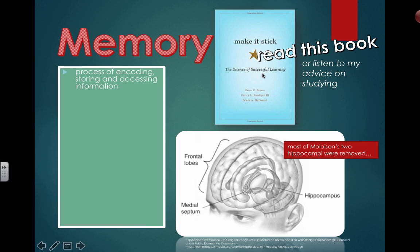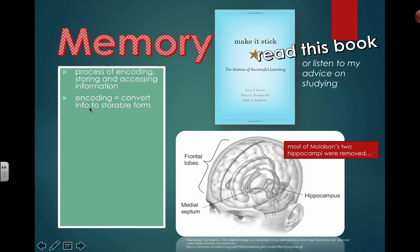By definition, memory is the process of encoding, storing, and accessing information. Encoding means converting the information you're taking in — like what is a prokaryotic cell, what is a eukaryotic cell — to a storable form. Storing can be for short or long term.